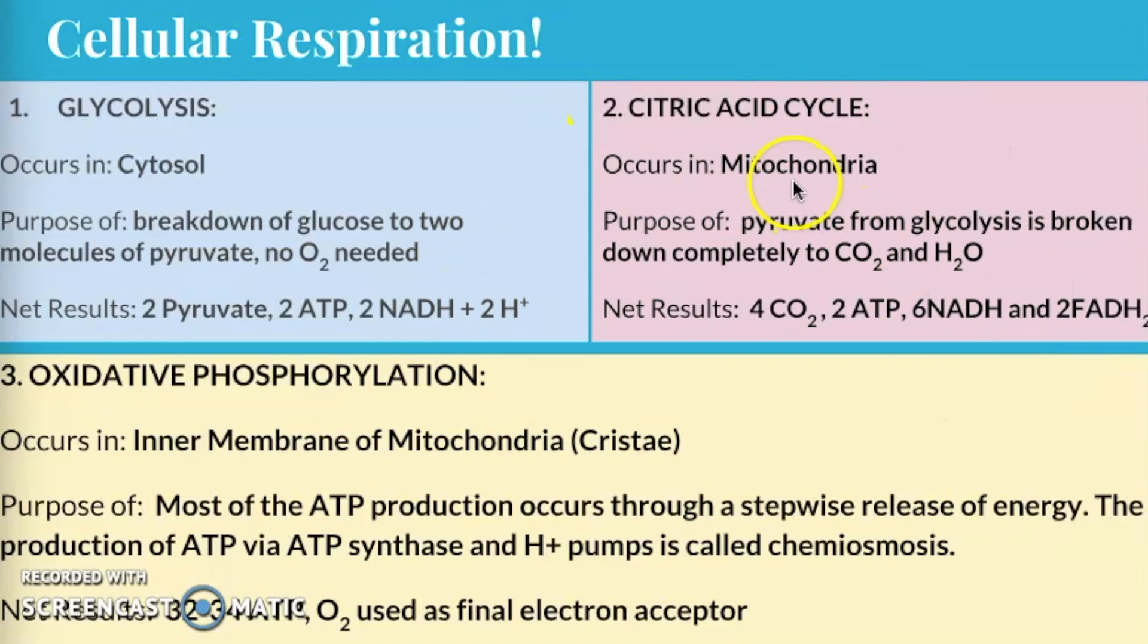The next step is going to take us into the mitochondria. We're breaking down the pyruvate from glycolysis into carbon dioxide and H2O. This is where the carbon dioxide is generated overall from the process of cellular respiration. And then we end up with carbon dioxide, ATP, NADH, and FADH2.